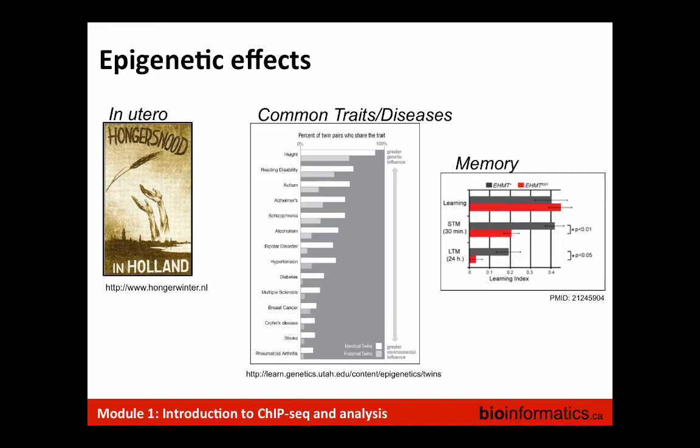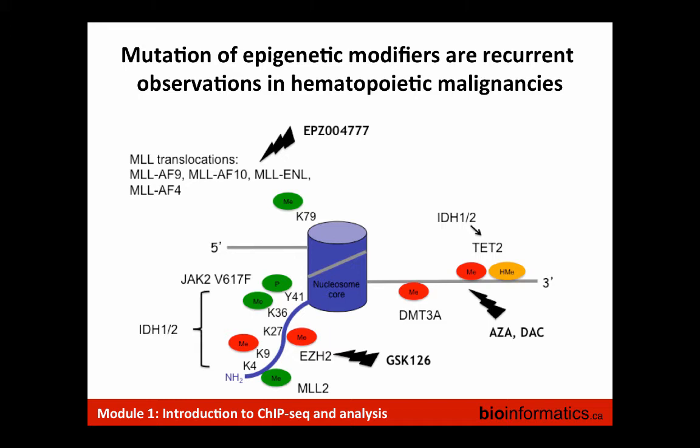Key considerations in performing ChIP sequencing: first, antibody specificity and sensitivity — I can't stress this enough. If you're working with data that others have generated, take the time to figure out what QC has been done on the antibody. Second, what marks should you profile? That depends on what you're trying to do: if you're interested in polycomb, study H3K27me3; for enhancer states, H3K4me1 and H3K27ac; for endogenous retroviral silencing, H3K9me3. You need to design your experiment and pick marks that will best answer your question.